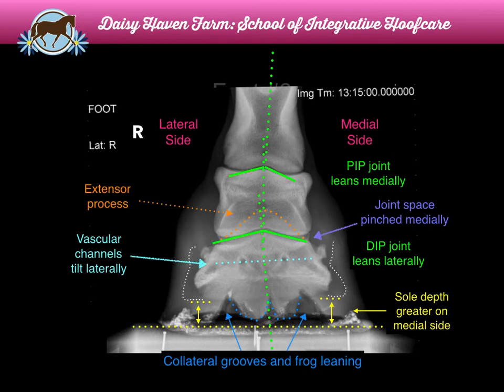What I actually needed to do for him was raise the lateral side of his foot and walk in the medial side. Once we did that, rolled his toe back, and some other things, the toe crack went away, the capsule was growing in evenly medial to lateral, we didn't have the asymmetry in the capsule anymore, and he did quite well.